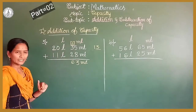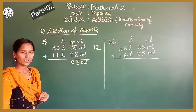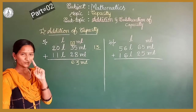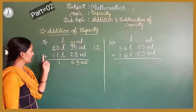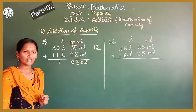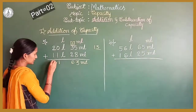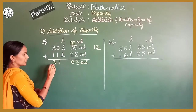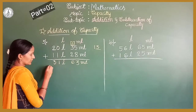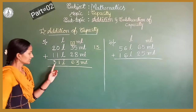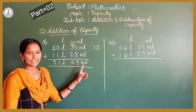Now come to the litre part. 0 plus 1 is 1. Write 1 here. Next, 2 plus 1 is 3. Write 3 here. So, 31 litres. The sum is 31 litres 63 millilitres.